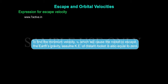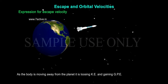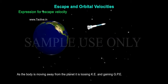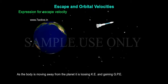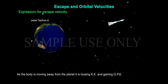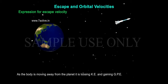To find the minimum velocity v_e which will cause the rocket to escape the Earth's gravity, assume kinetic energy of distant rocket is also equal to zero. As a body is moving away from the planet, it is losing kinetic energy KE and gaining gravitational potential energy.